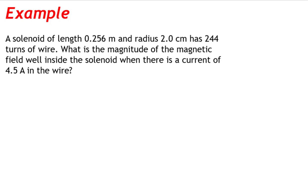A solenoid of length 0.256 meters and radius 2.0 centimeters has 244 turns of wire. What is the magnitude of the magnetic field well inside the solenoid when there is a current of 4.5 amps in the wire?